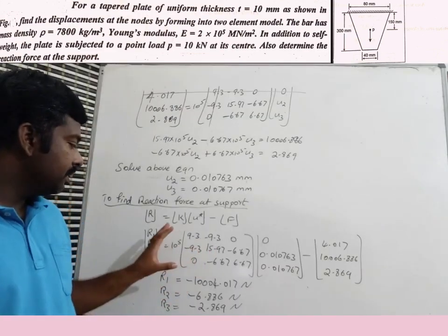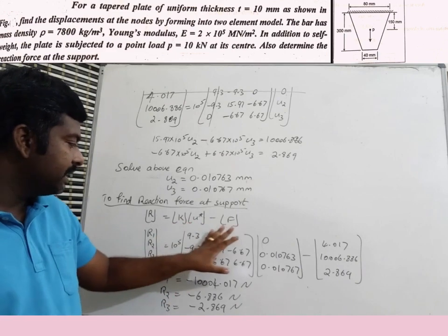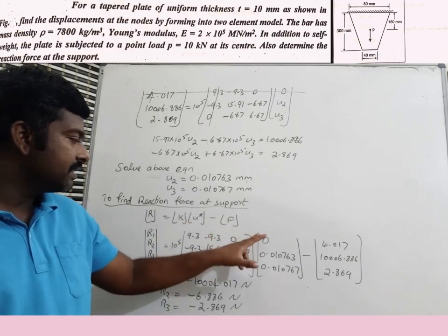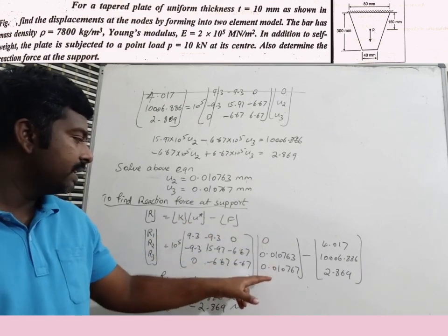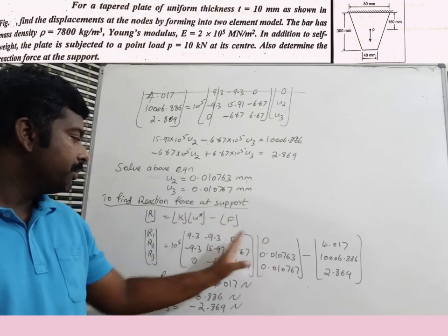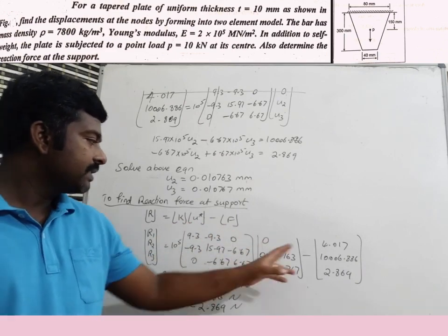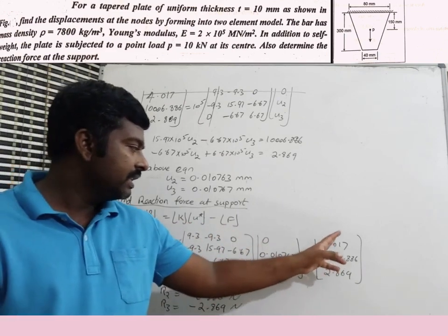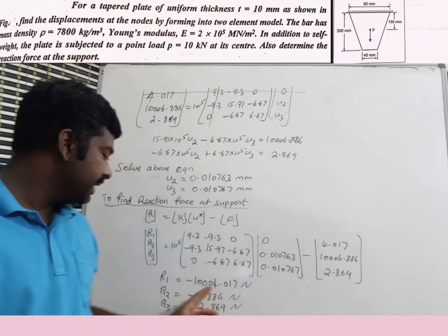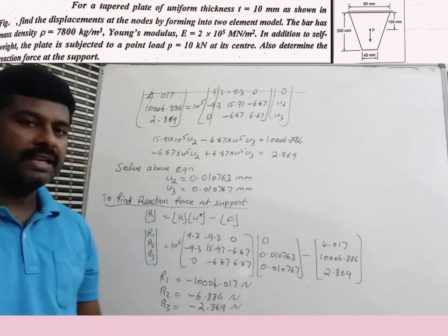The solution involves multiplying the 3×3 global stiffness matrix by the 3×1 displacement vector and subtracting the force vector to obtain the final reaction force answers. Thank you.